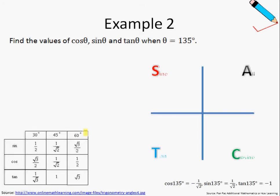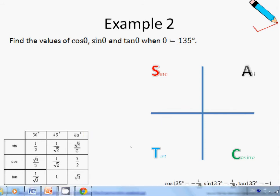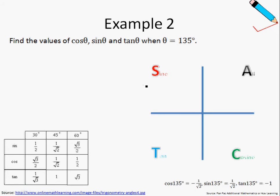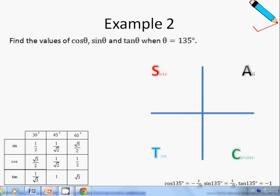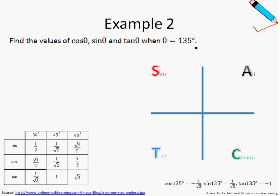In example number 2, we are given that theta equals 135 degrees, and we are asked to find the cosine, the sine, and the tangent of theta. Recall that theta is measured in an anti-clockwise direction. Since theta is 135 degrees, alpha must be 180 degrees minus 135, which is just 45 degrees.